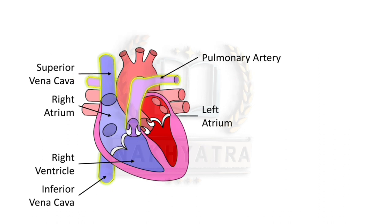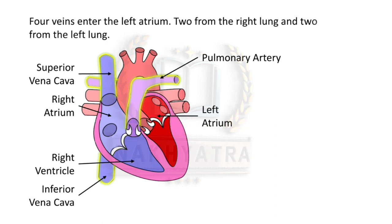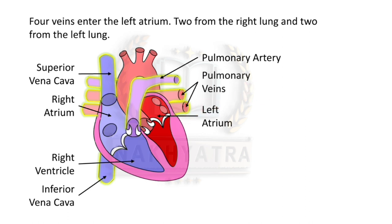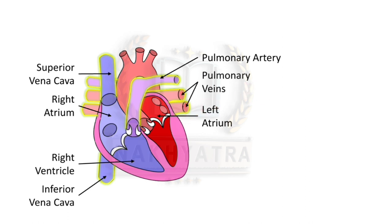The left atrium receives four veins — two from the right lung and two from the left lung. These are called the pulmonary veins.